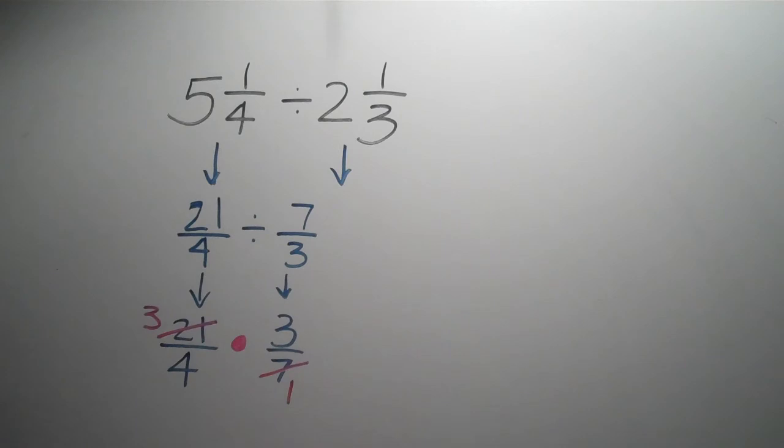3 and 4, I can't do anything to simplify that, so I'm just going to now multiply across the top. 3 times 3 is 9, over 4 times 1 is 4. And I have 9 over 4 as my final answer.